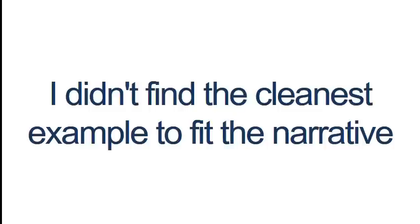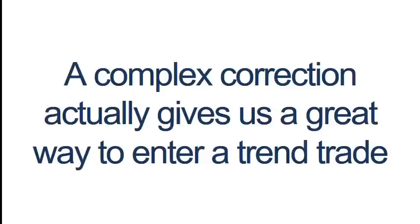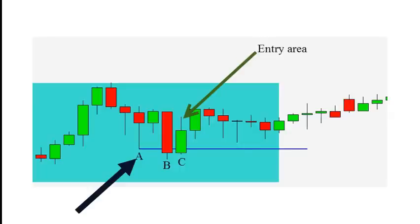All we're looking for is an indication that the correction is losing steam. A complex correction gives us a great way to enter a trend trade long through a failure to break lower. The lower time frame chart shows us how to do just that. This long shadow indicates buyers are present, either on a simple pullback on this time frame or a complex one on a lower time frame.